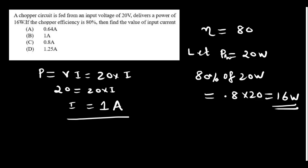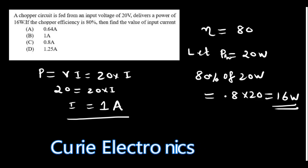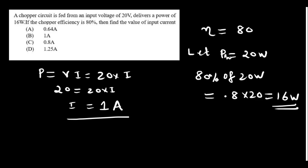A chopper circuit fed from 20V input delivers 16W of power with 80% efficiency. Find input current. Since 16W is 80% of input power, input power = 20W. Using P = V × I: 20 = 20 × I, so input current = 1 amp.